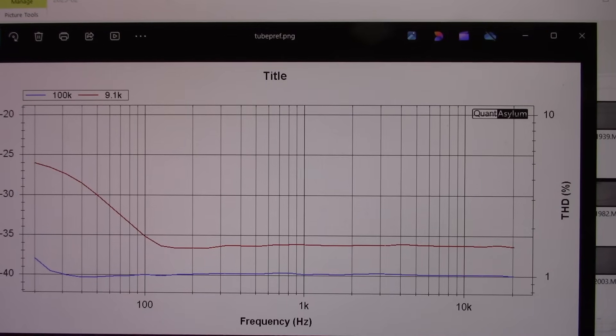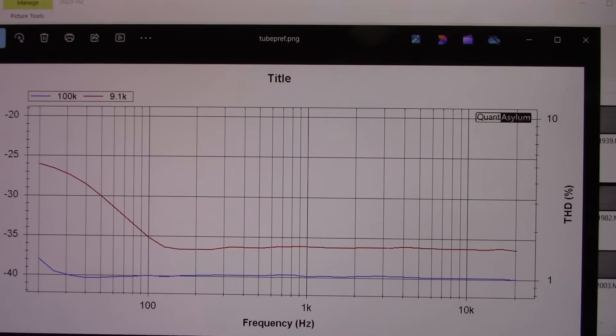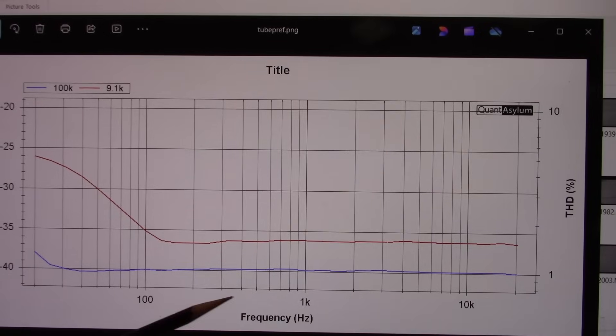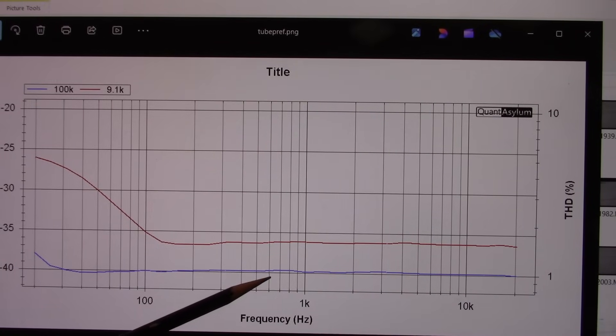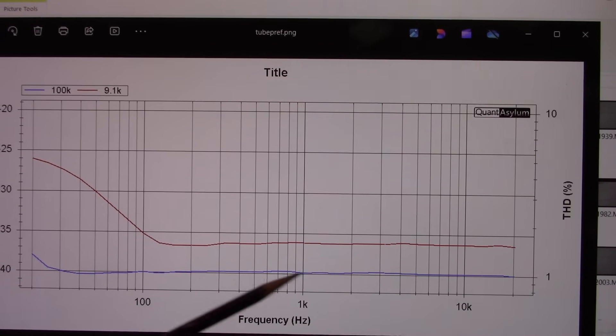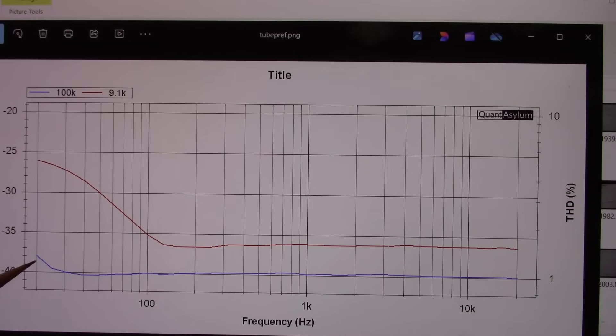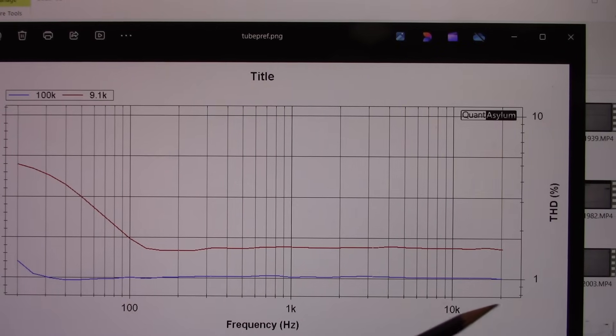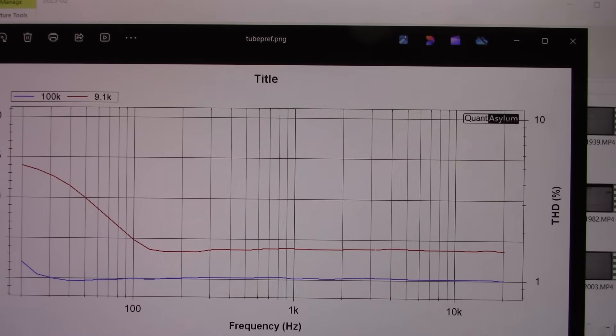Frequency versus distortion. In both cases, measured at 0 dBV. So with the load on the output of the preamp at 100k, pretty flat across the frequency band. Maybe just a little peak up here at 20 hertz. But still around 1%, so it's not high fi.